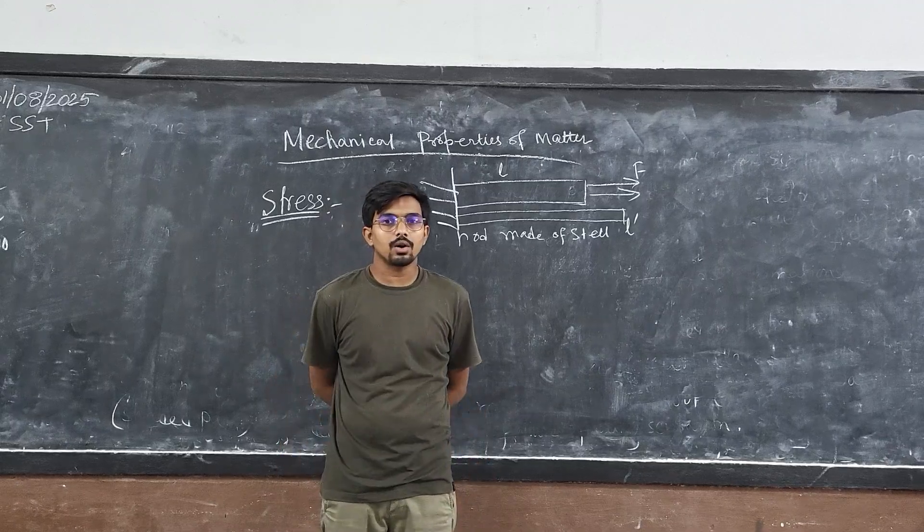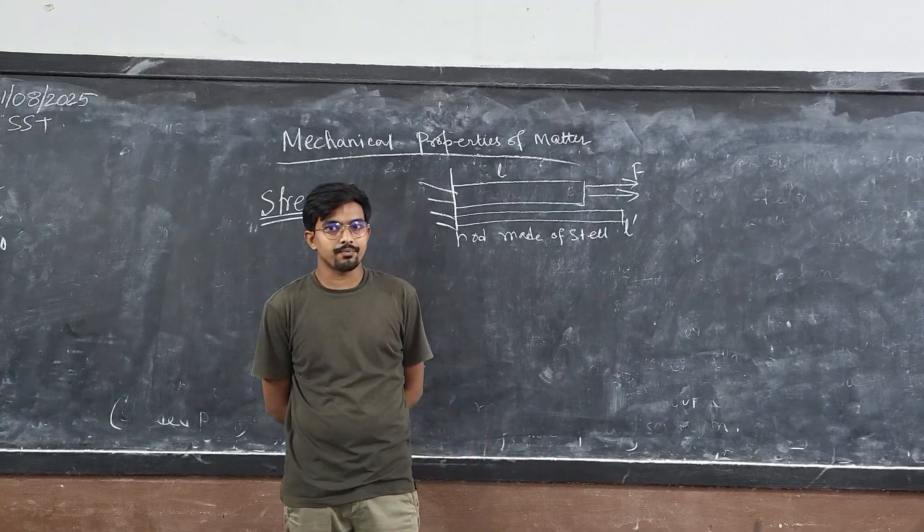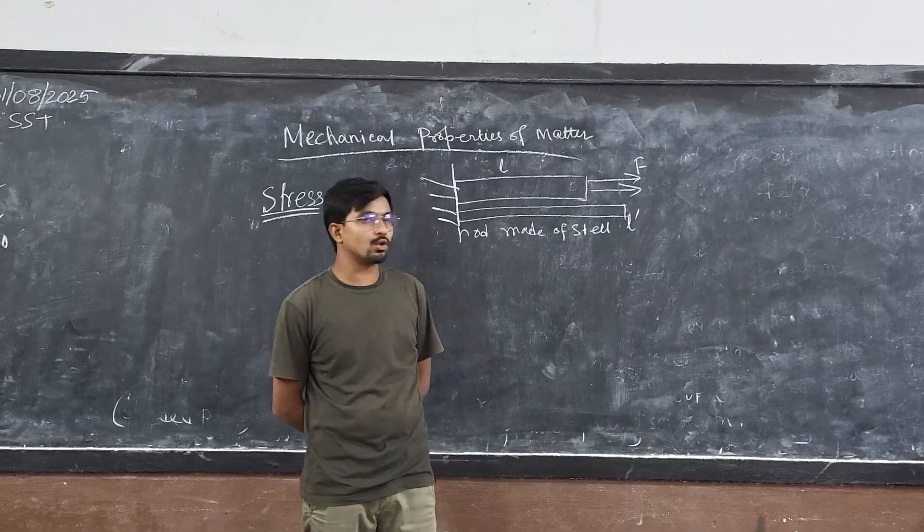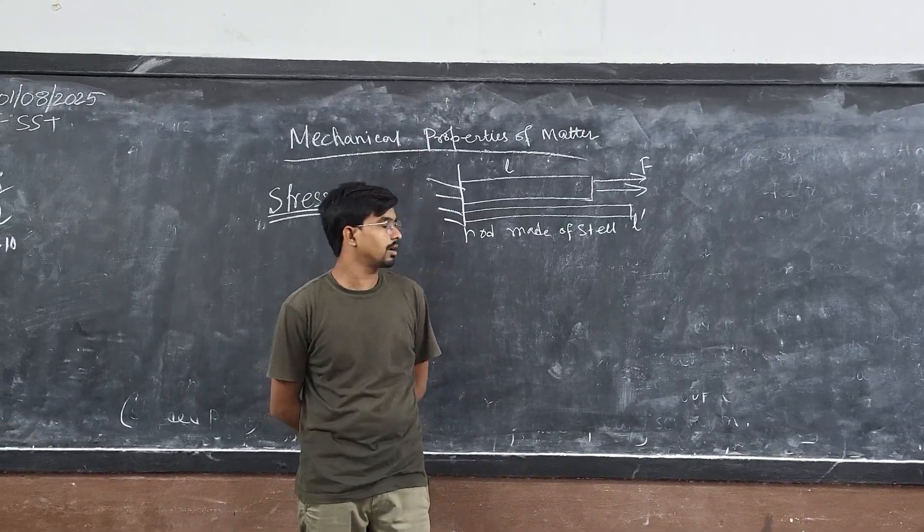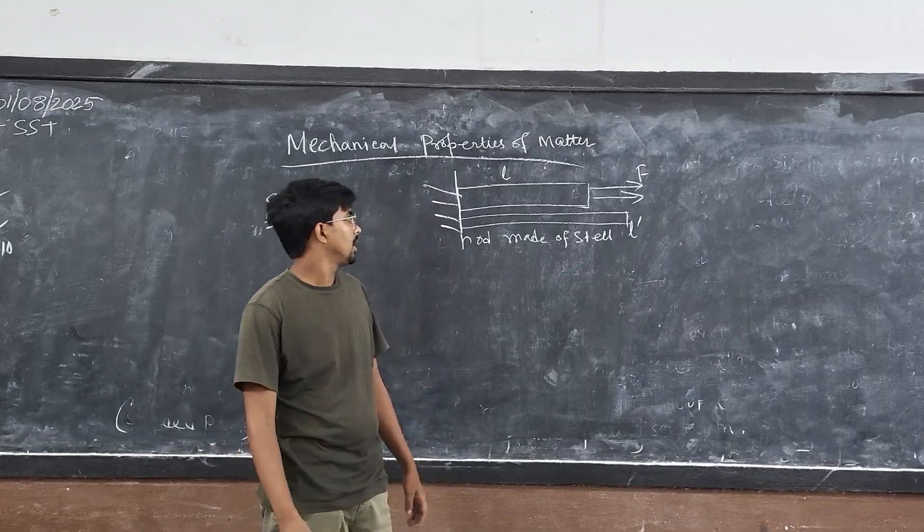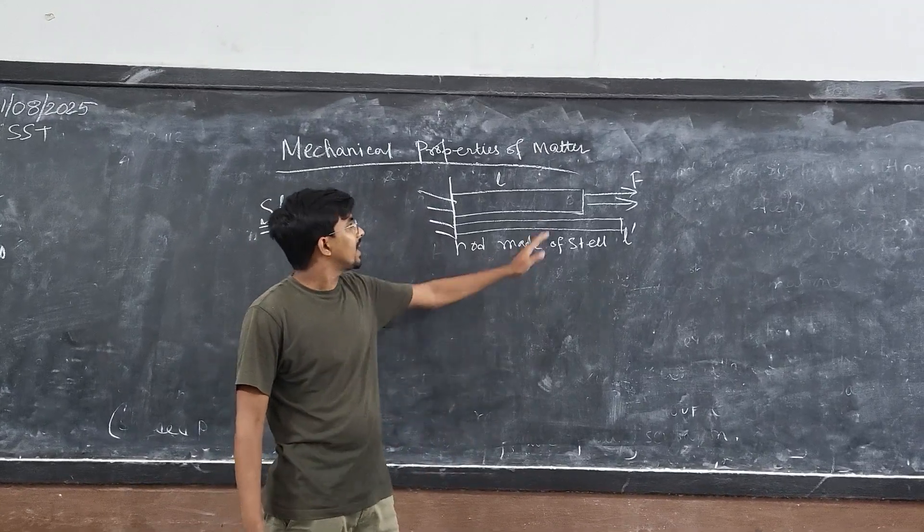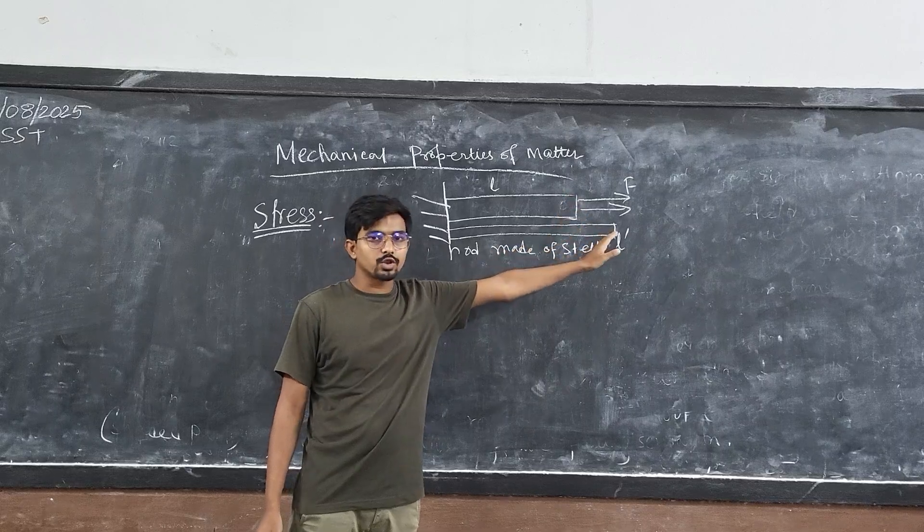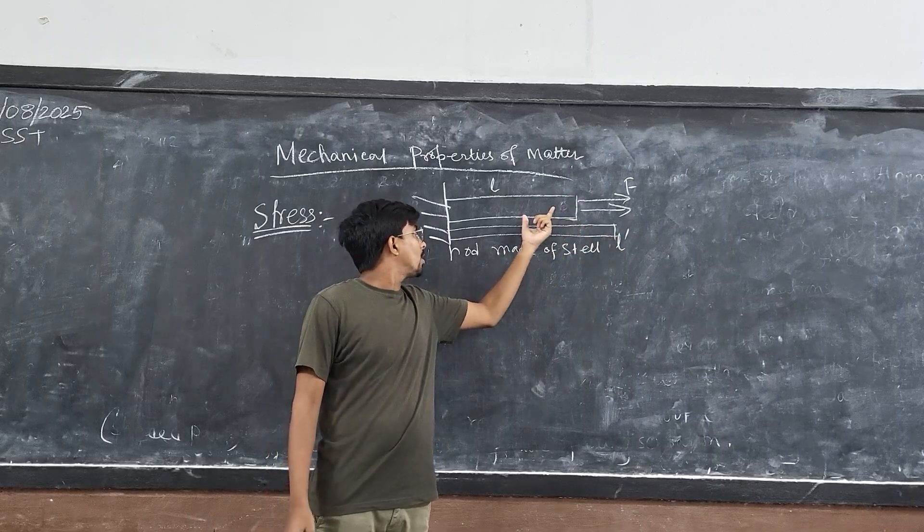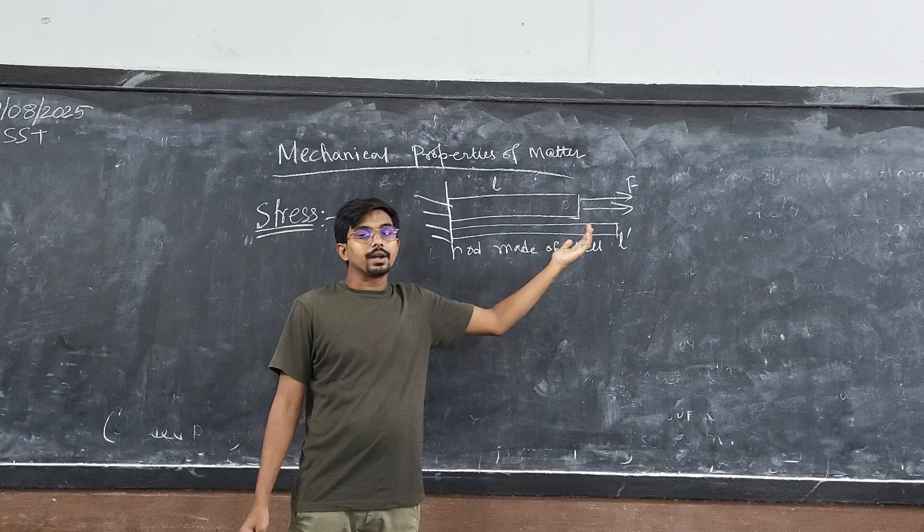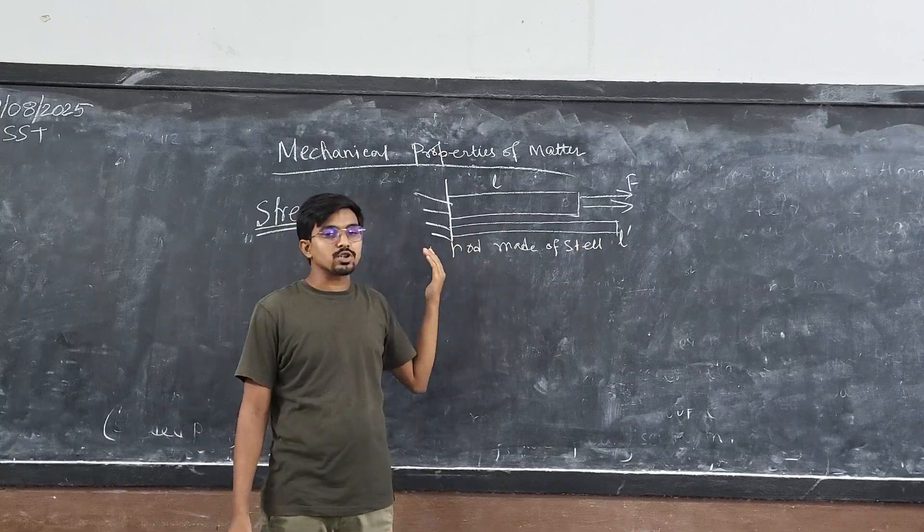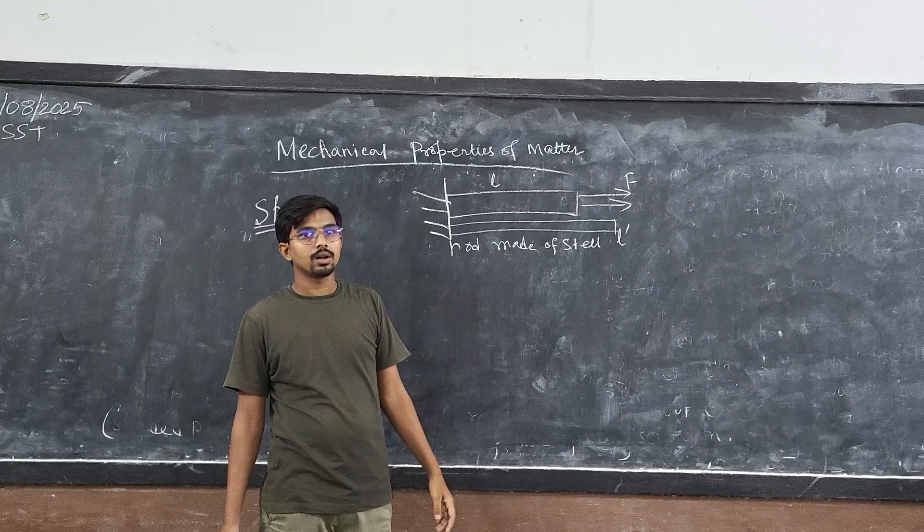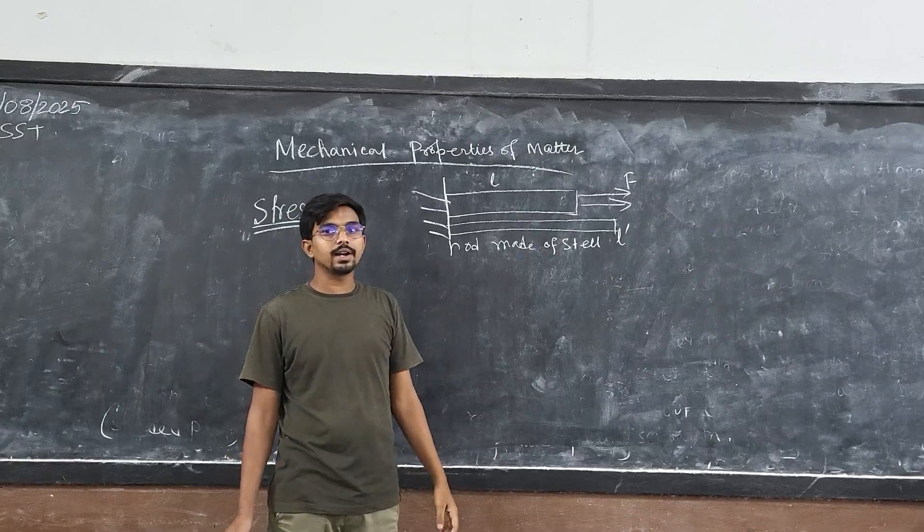Which can deform the original shape or size. That is why this applied force is also known as deforming force. Now, whenever we will remove this force, the actual rod will gain its original shape or size or length. Why? This is because of the tendency of elasticity.